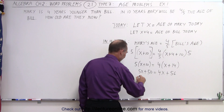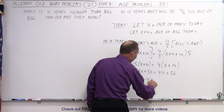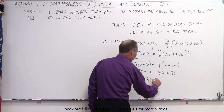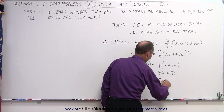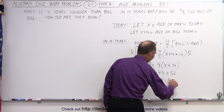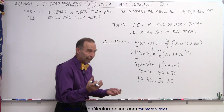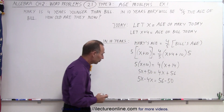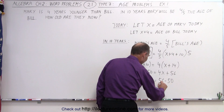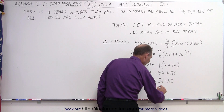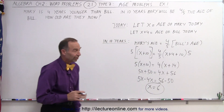Now we distribute to get 5x plus 50 equals 4x plus 56. We move all the x's to one side: 5x minus 4x equals 56 minus 50. That gives us x equals 6.